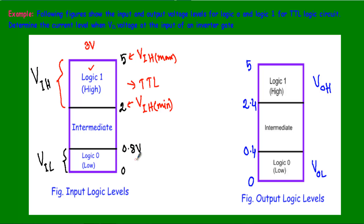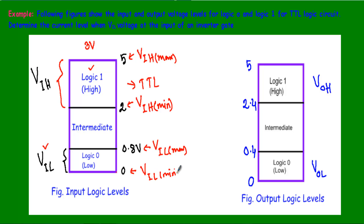For a TTL logic circuit, any voltage within 0 to 0.8 volts will be treated as logic 0, denoted as VIL. VIL max is 0.8 volts and VIL min is 0 volts. For example, if I apply 0.5 volts at the input terminal, since it falls within the 0 to 0.8 volt range, the input will treat this voltage as logic 0.